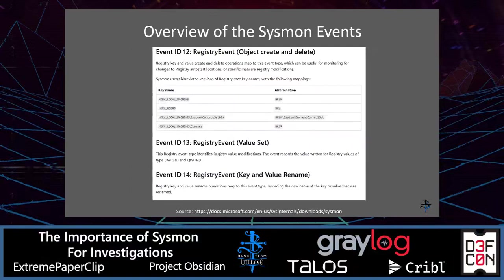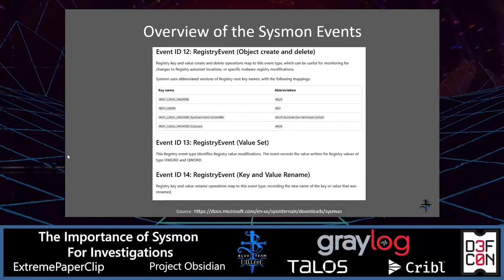Event IDs 12, 13, and 14 are the registry events. Event ID 12 covers an object created or deleted in the registry. Event ID 13 shows the value that was set for that registry event. Event ID 14 covers key and value rename.